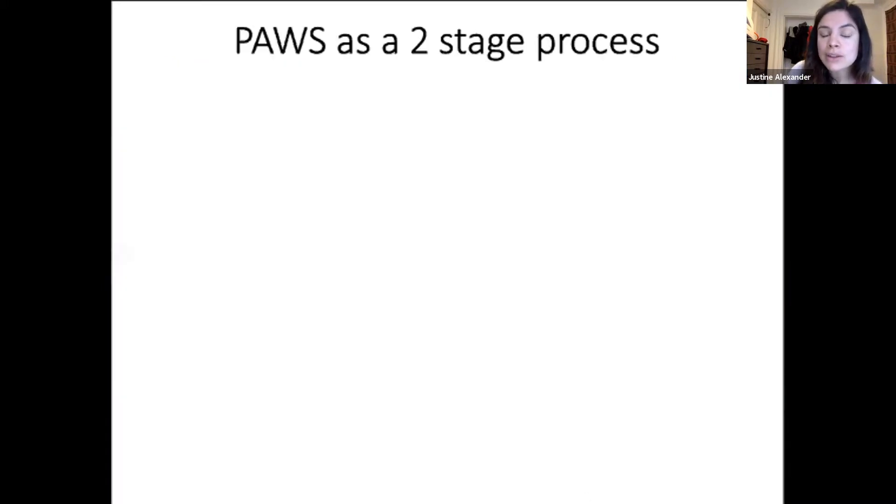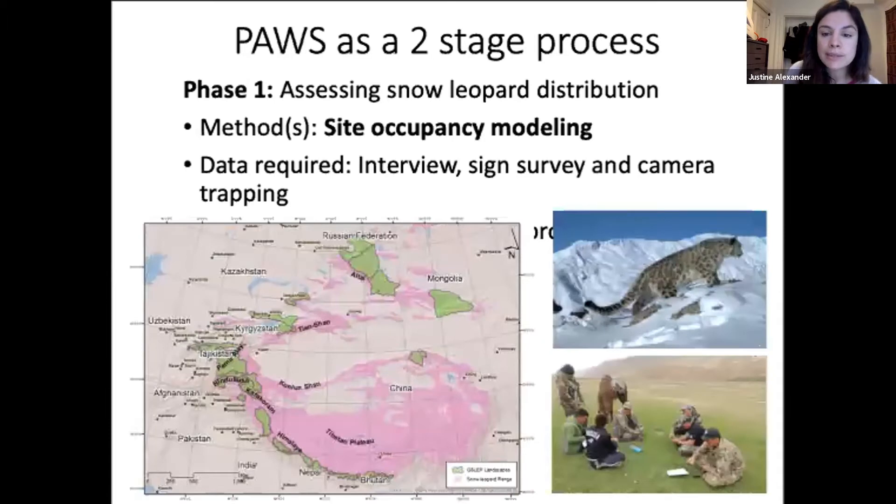So how is it planned to go about this program? To achieve the main objective of PAWS, there's a two-stage process that has been identified by the technical panel and set up by the GSLEP steering committee. The first one, an important step which links directly to this module, is developing distribution models for snow leopard.